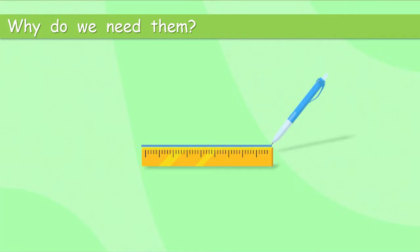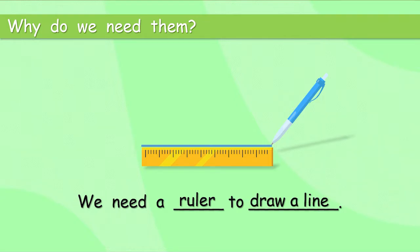Now we've got two things here. Let's think. Let's use the one at the bottom. What is it? Ruler. And what are we doing here with the ruler? Draw a line. Great. So let's say the whole sentence. You listen and say it after me. We need a ruler to draw a line. Great. Well done.